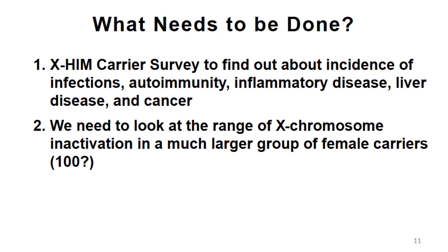So what do we need to do? One thing is we need to find out what sorts of things affect CD40 ligand carriers. We've been talking about trying to do a survey of carriers just to understand: are carriers experiencing an increased rate of infections, autoimmunity, or inflammatory disease? Liver disease would be very important, and malignancies would be sort of the minimal set of information we'd want to learn. The only way we're going to know is to ask. This is a study that needs to be done.